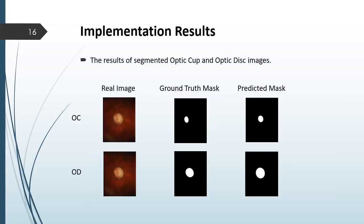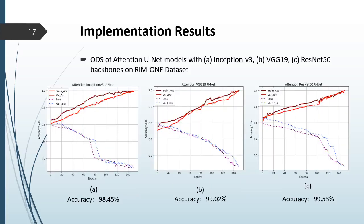The results of segmented optic cup and optic disc images are shown here. The segmentation results using the attention U-Net were compared to ground truth images, and the segmentation results were closely aligned with the ground truth. Let's take a look at the implementation results for each CNN architecture. The training accuracy, validation accuracy, training loss and validation loss for each architecture and dataset are shown here. Both datasets were trained for 150 epochs in this study.